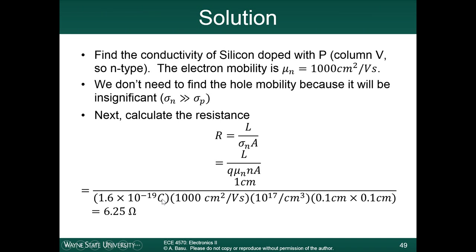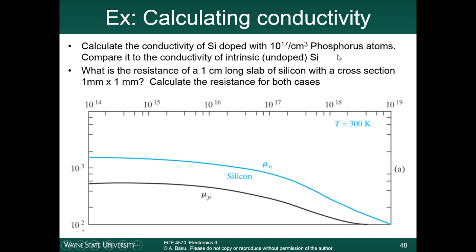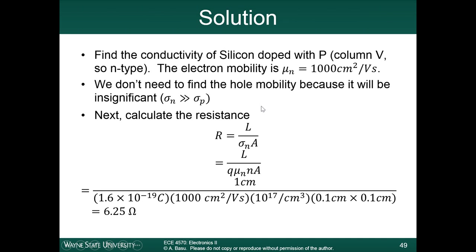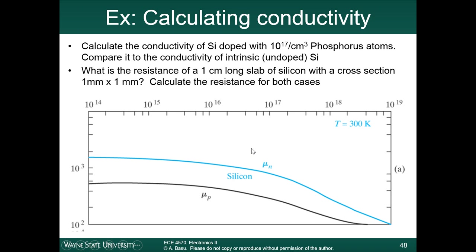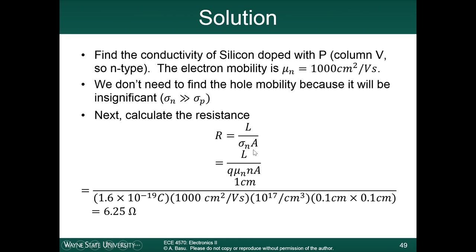The problem also asks for calculating the conductivity of intrinsic silicon — I will let you do that on your own. Remember, for intrinsic silicon you have to do sigma_n plus sigma_p and account for both when calculating the conductivity and resistance. What you will find is that the conductivity of intrinsic silicon is much, much lower than doped silicon. So your resistances are going to be much larger for the undoped case. This shows you that we can use doping to control the resistance of a semiconductor material.